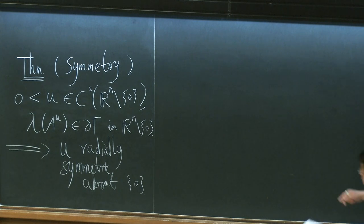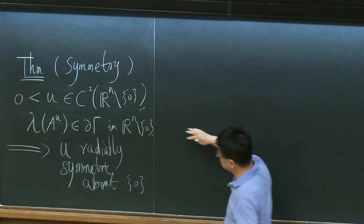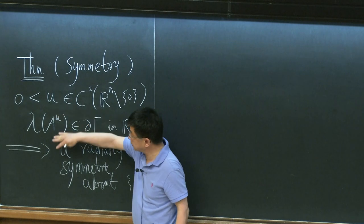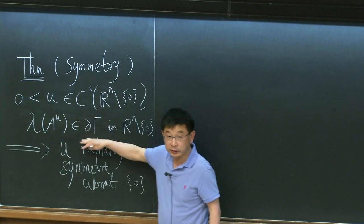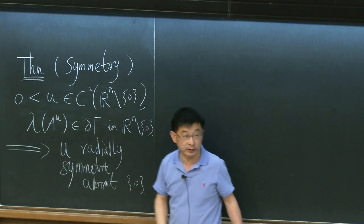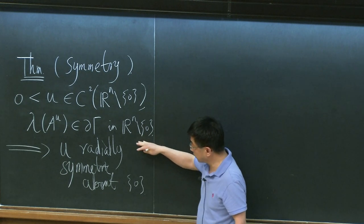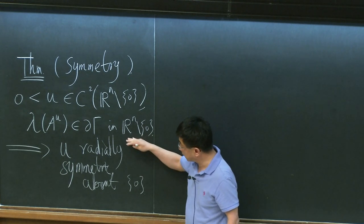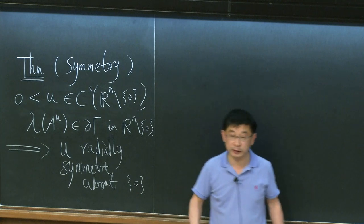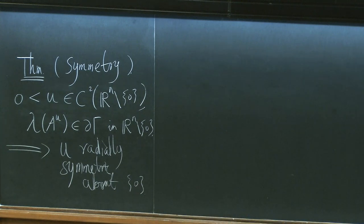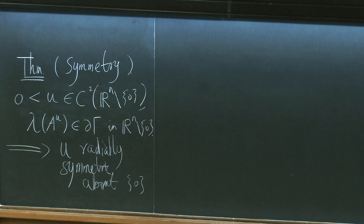So if a function satisfies this degenerate elliptic equation in a punctured plane, punctured space, then U should be radially symmetric. U can be continuous, satisfying the equation in the viscosity sense, but let's prove it for C2.